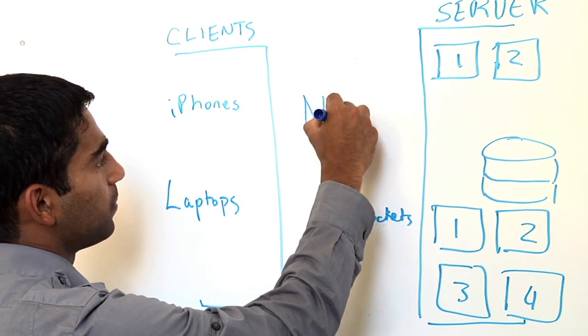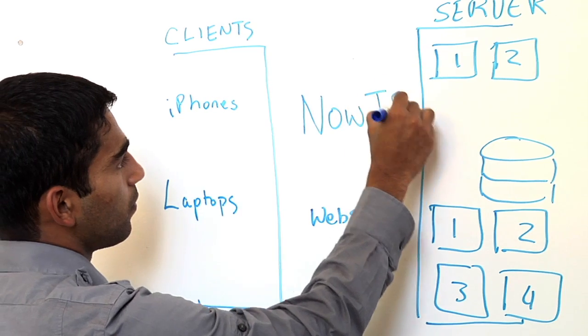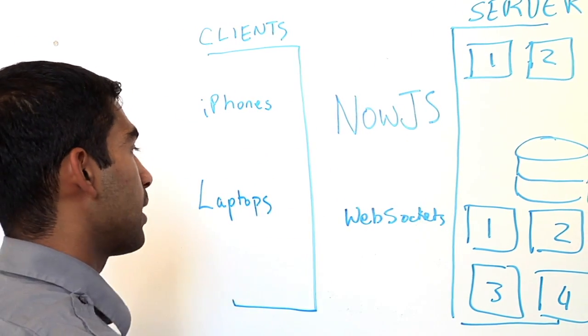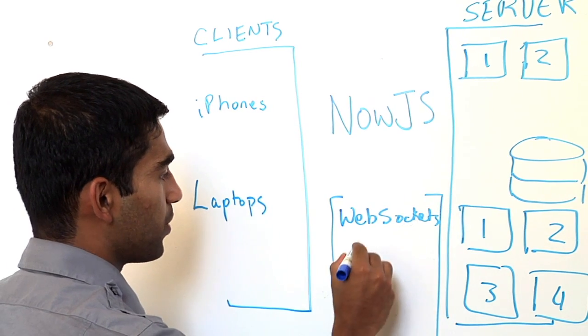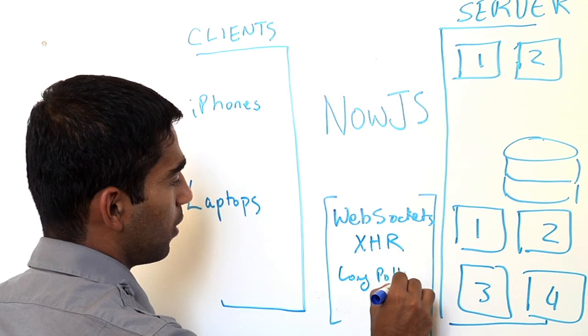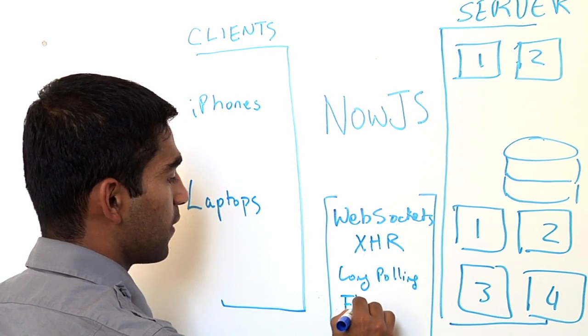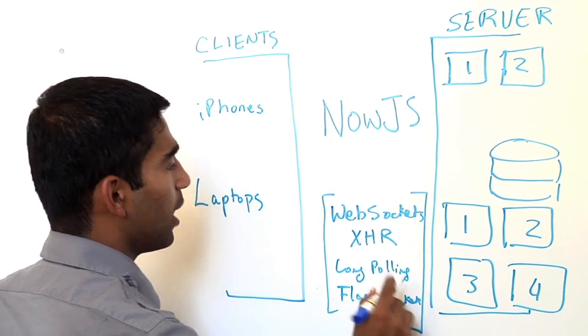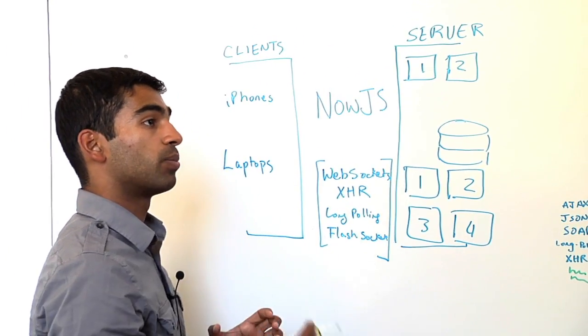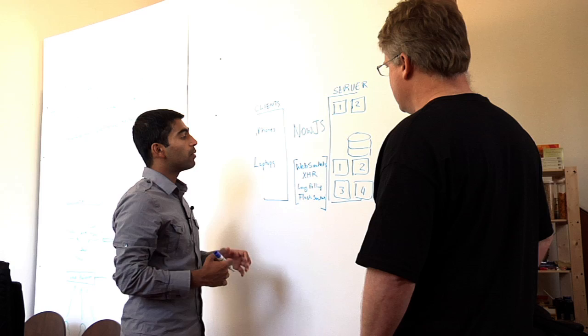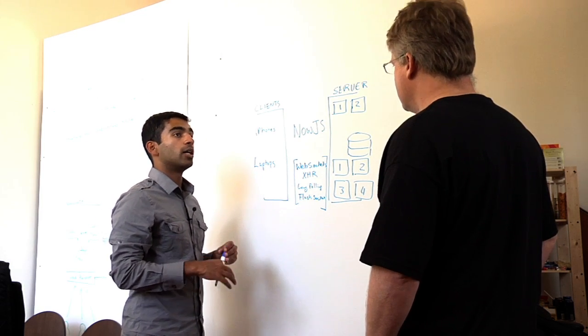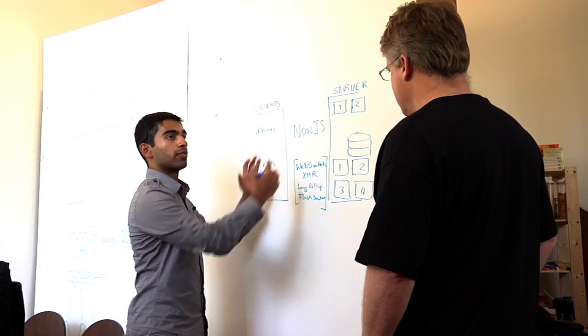But on top of everything, you have Now.js. And Now.js goes smack dab in the middle. Now.js allows you to be using existing technologies like WebSockets, XHR, long polling, flash sockets. Everything gets abstracted away. We pick and choose your transports based on what's needed, based on what's supported, based on what's best for you. And we use open source technology to help us do this. Technology like Socket.io and Node.js helps us build some of our infrastructure.